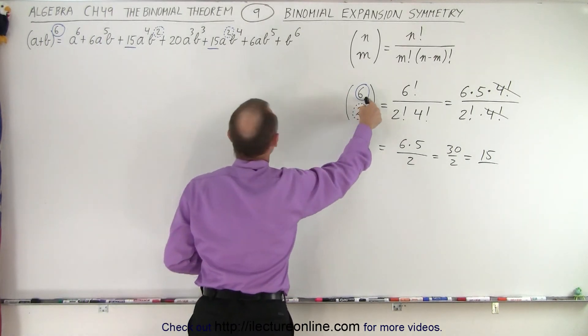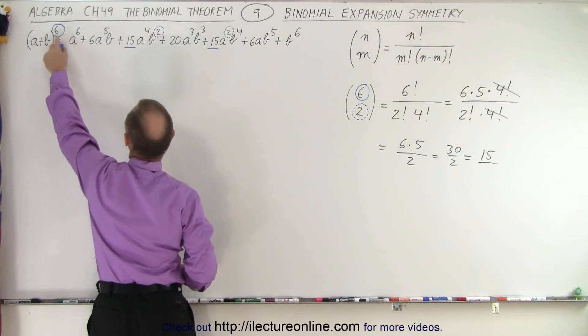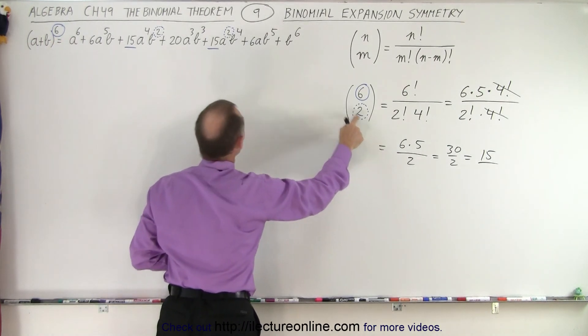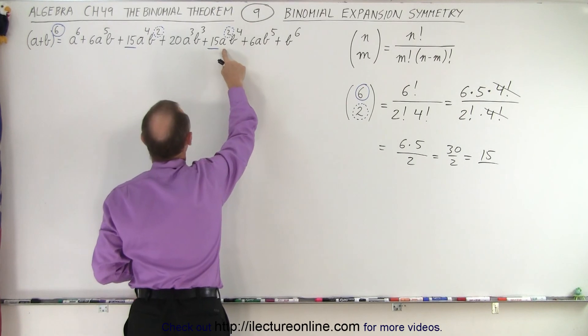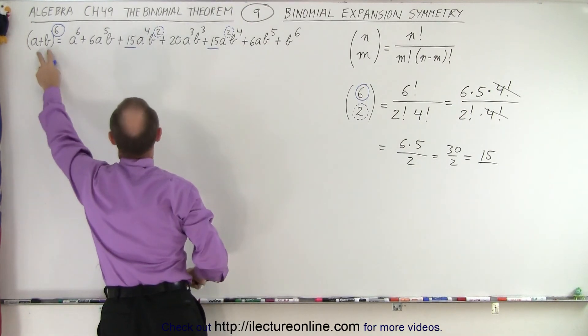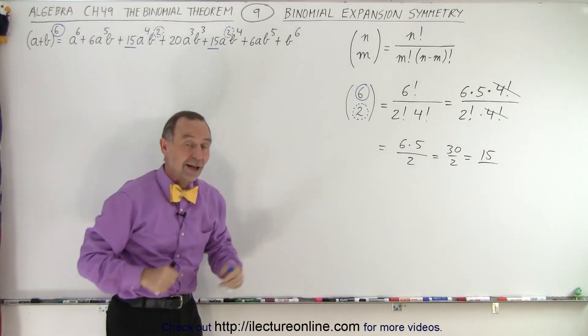It doesn't matter. The top number is equal to the exponent of our binomial expansion. The bottom number is the exponent of either the first or the second term in our binomial. And that is how it's done.